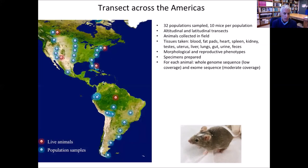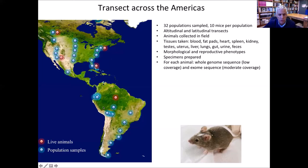To do this, we've conducted transects across North and South America, as shown on the map. We've done three transects in North America, a large latitudinal transect in South America, and two altitudinal transects in the Andes from sea level to over 3,000 meters in Ecuador and Bolivia. I'm not going to talk about those elevational transects today — that work was just published in Genetics. But I will talk about the latitudinal transects.